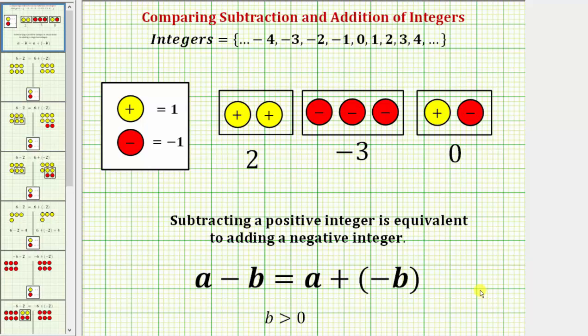Welcome to a lesson on comparing subtraction and addition of integers using integer chips. For review, a positive chip equals positive one, and a negative chip equals negative one.